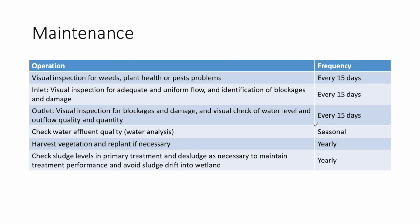Maintenance of a wetland is simple, mainly gardening and inspection. Every 15 days to one month: inspect for weeds and remove them, check plant health and pest problems, and inspect the inlet and outlet pipes for uniform flow, blockages, and damage. Yearly tasks include checking effluent water quality via lab analysis, harvesting and replanting reeds if necessary, and checking sludge levels in the primary treatment tank to maintain performance and avoid excessive drift into the wetland.